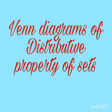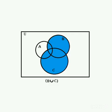Venn diagrams of distributive property of sets. Venn diagrams are used to represent sets. They are named after John Venn, an English logician. This diagram consists of rectangles and closed curves, usually circles. The universal set is represented by a rectangle, and sets A, B, and C are represented by circles.